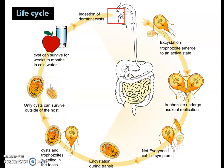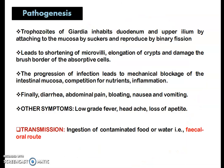Only the cyst can survive outside the body of the host. The cysts may enter water bodies or contaminate food materials, which are then ingested by other humans, and thus the life cycle of Giardia continues.